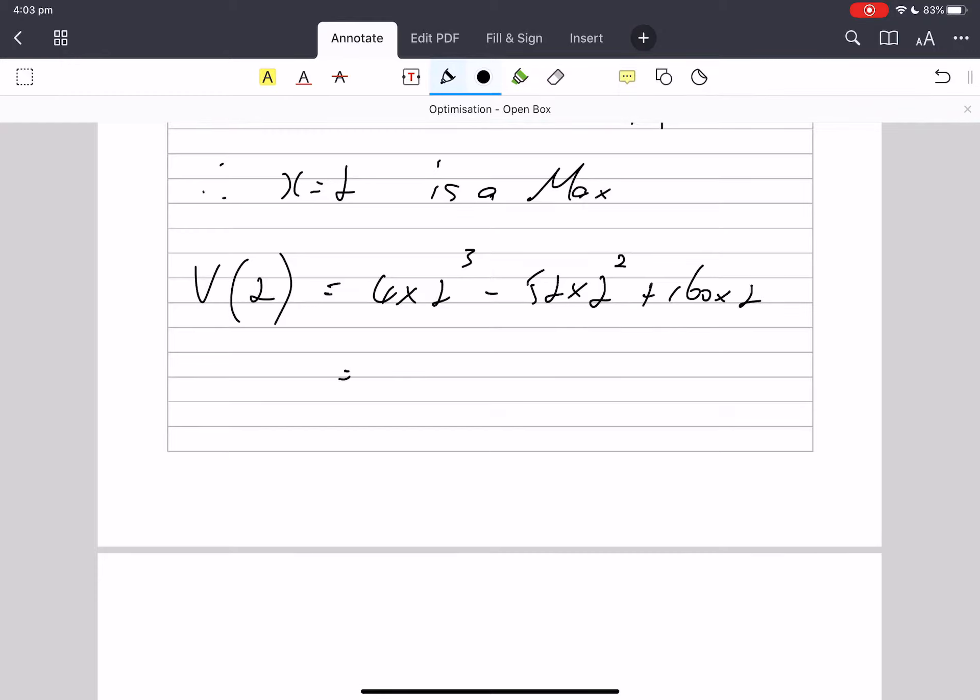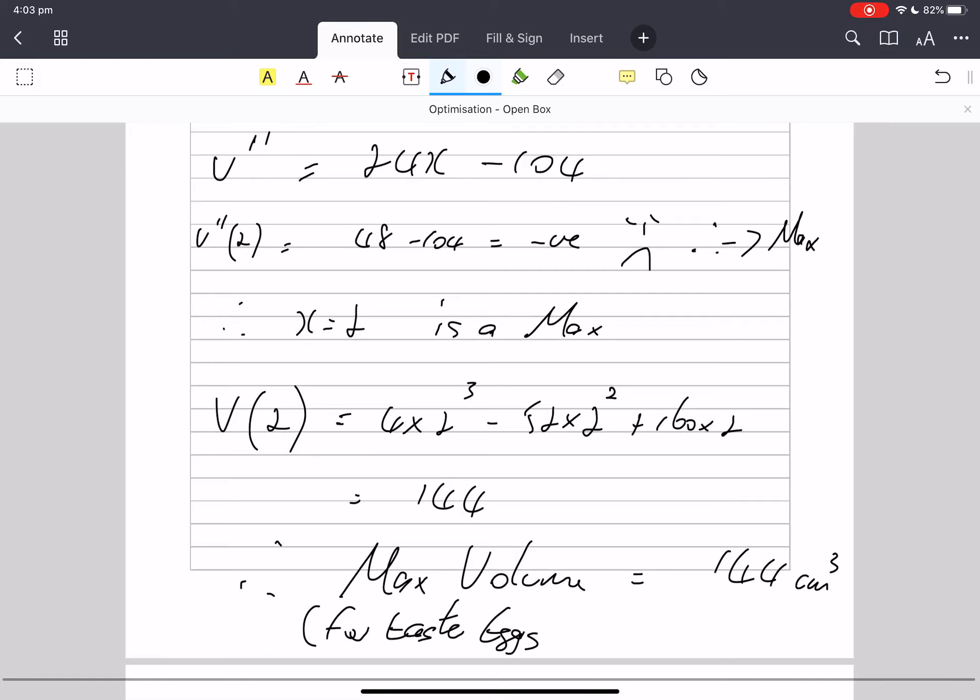Definitely a calculator. 4 times 8 is 32 minus 52 times 4. So therefore, maximum volume for Easter eggs is 144 centimeters cubed. Okay, that was fun.